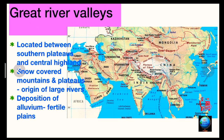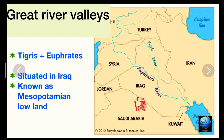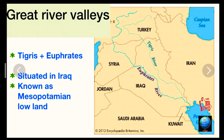The first is the Tigris and Euphrates Valley, situated in Iraq. It is also known as the Mesopotamian lowland.